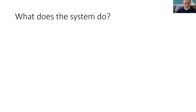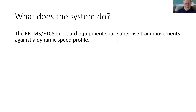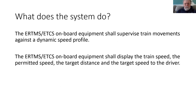So what does the system do when it's in full supervision? Looking at the definitions in Subset 26, Chapter 4, the ETCS onboard shall supervise train movements against a dynamic speed profile. It shall display to the driver the train speed, the permitted speed, the distance to the target where the train needs to stop or reduce speed, and the target speed at a stopping location or reduction speed.